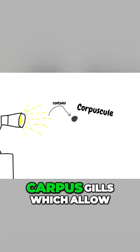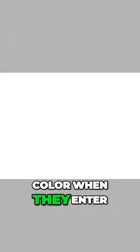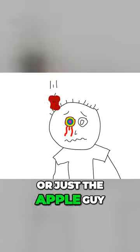The guy who hypothesized light is made up of particles called corpuscles which allow us to see color when they enter our eyes. Or just the apple guy.